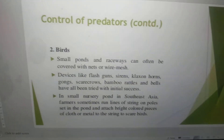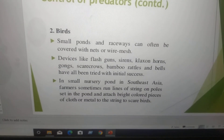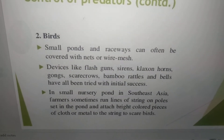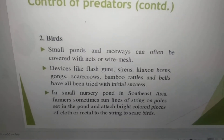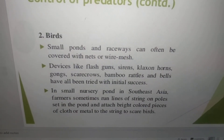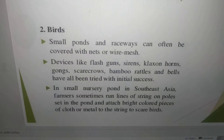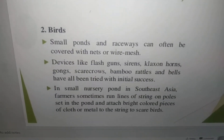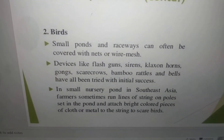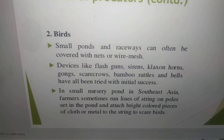Bats also create some problems. Small ponds and rice paddies can often be covered with nets or screens. Devices like flashguns, sirens, horns, bamboo rattles and bells have also been tried with initial success in small nursery ponds in South East Asia. Farmers sometimes run lines of string on poles and attach bright colored pieces of cloth or metal to the string to scare bats.